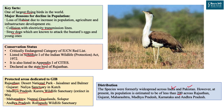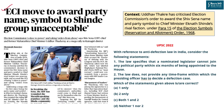Let us now move to the next article, which appeared on page 3 of The Hindu and talks about an important role played by the Election Commission that has raised controversy in Maharashtra. Uddhav Thackeray has criticized the Election Commission's order to award the Shiv Sena name and party symbol to the existing Chief Minister Eknath Shinde's faction. Eknath Shinde took the majority section from the erstwhile Shiv Sena and collaborated with the BJP to form the government in Maharashtra.